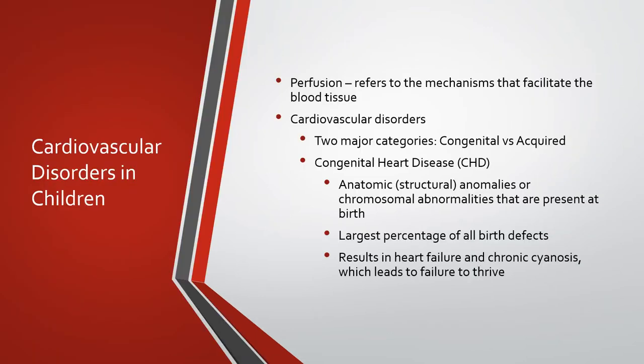As we look to define perfusion, that really refers to the mechanism that facilitates blood to tissue. Alteration in perfusion is a significant cause of chronic illness and death in children. Cardiovascular disorders can be categorized in two major categories: congenital versus acquired. Congenital heart disease is defined as structural anomalies present at birth. Congenital heart defects account for the largest percentage of all birth defects, and these defects can result in heart failure and chronic cyanosis, which can eventually lead to failure to thrive.